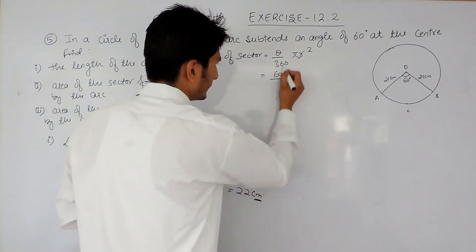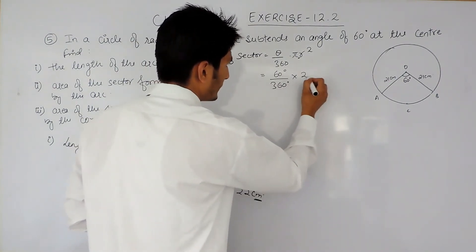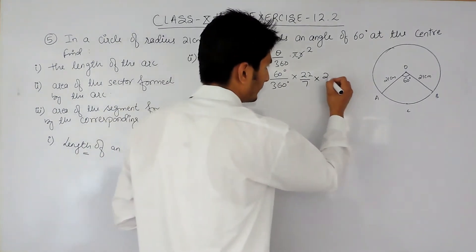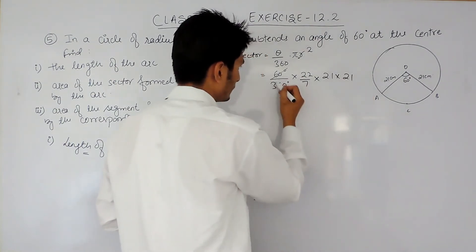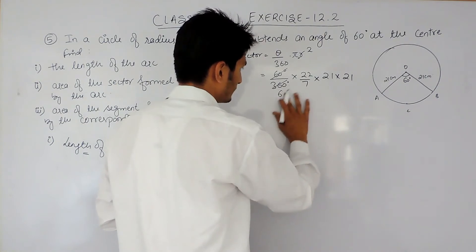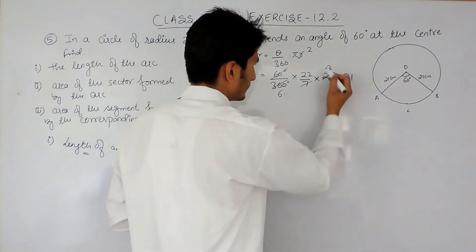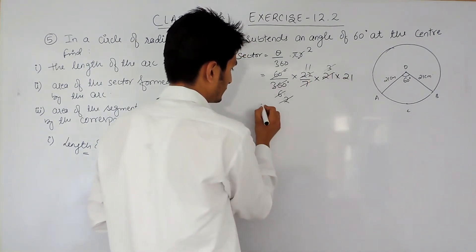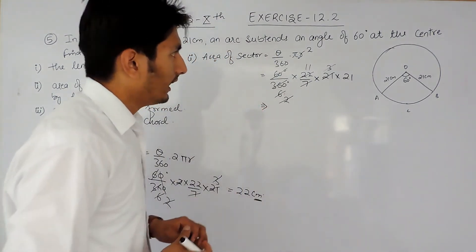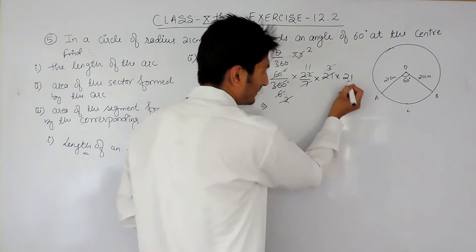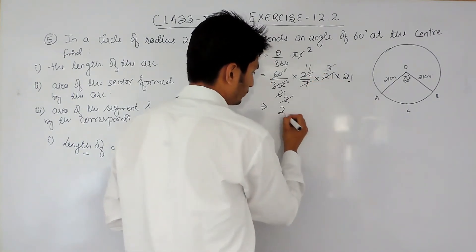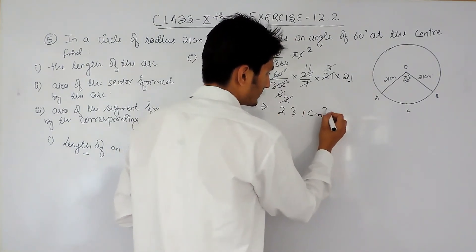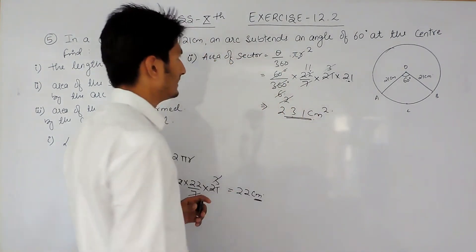Substituting values: theta is 60 degrees, divided by 360, multiplied by 22/7, multiplied by 21 × 21. After cancellation — 60 and 360 cancel 6 times, then 3 times, then 2 times, and 11 times — we get 231 cm². To multiply by 11: write 2 and 1, and add the two digits in between, giving 231 cm². So the area of the sector is 231 cm².